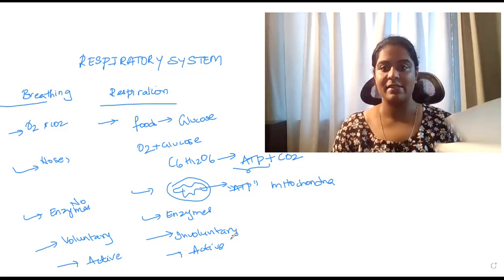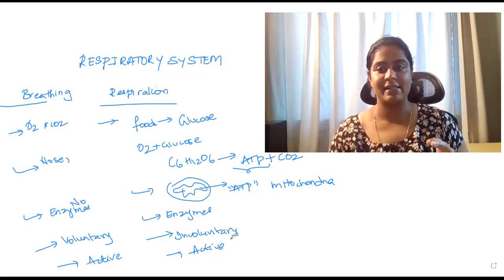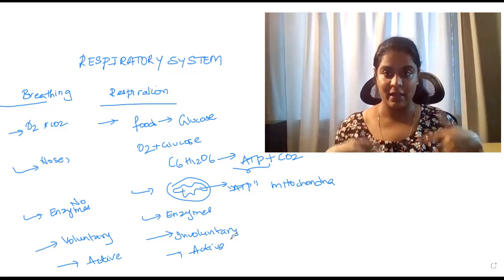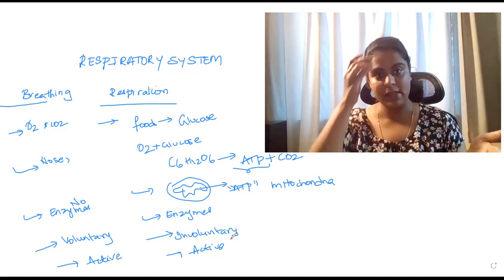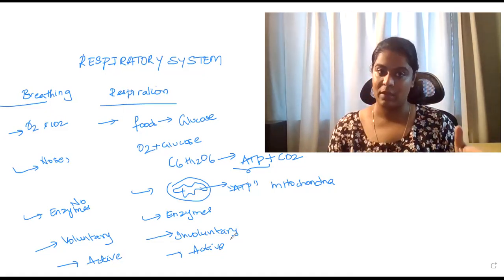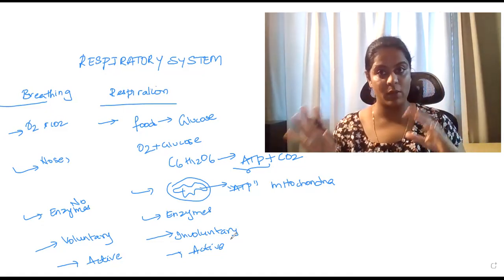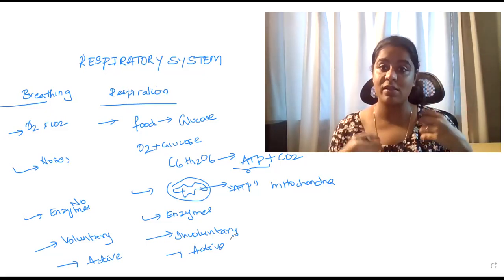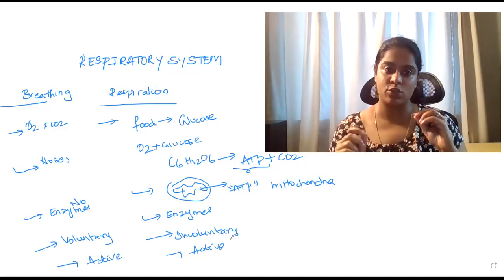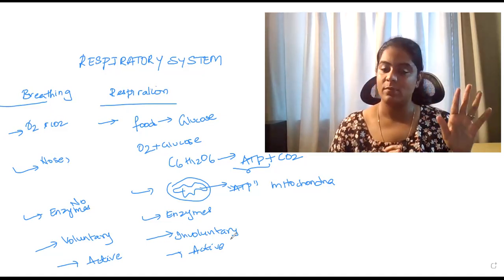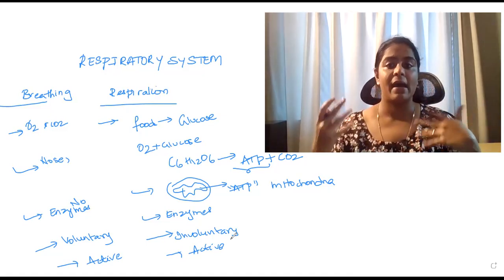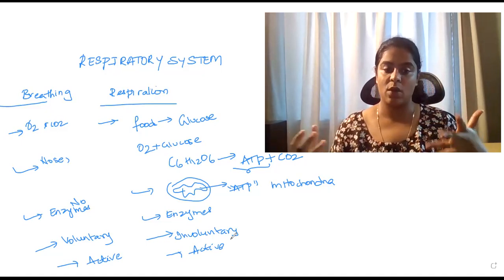So this is about the differences between breathing and respiration. Let's check the NCRT book to confirm we've covered the main things. Breathing is the process of inhaling oxygen and giving out carbon dioxide. Respiration is the process where food is first broken down into glucose in the digestive system, then oxygen reacts with this glucose to give ATP, and it occurs in the mitochondria. In breathing no enzymes are involved, whereas in respiration enzymes are involved. Breathing is a voluntary action and respiration is involuntary.